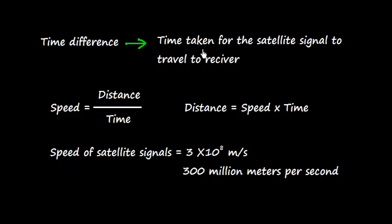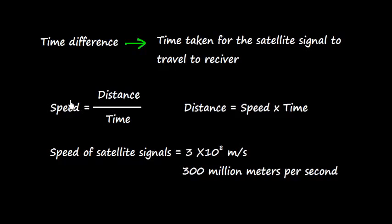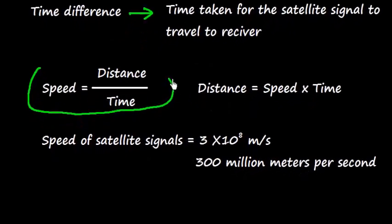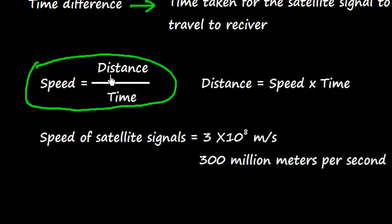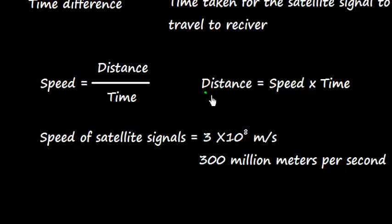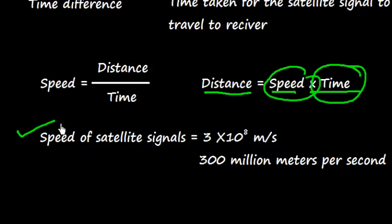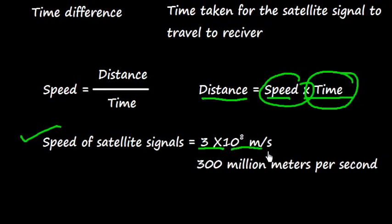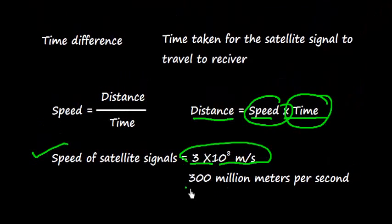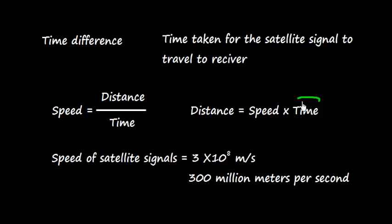Now we use a very simple and basic equation which is speed equals distance divided by time. That gives me the distance: distance equals speed times time. All I need to do is calculate the time. The speed I know very well. The speed of satellite signals is 3 × 10^8 meters per second or 300 million meters per second. We can see that the time measurement is going to be very critical.